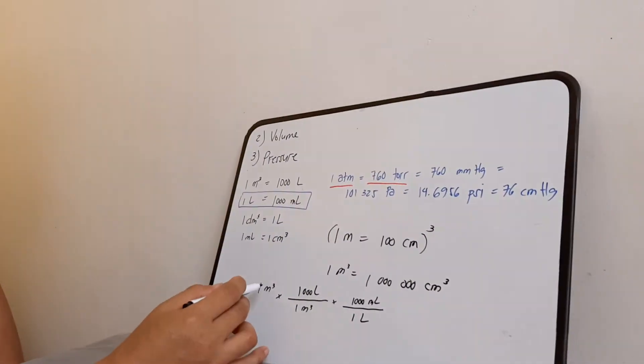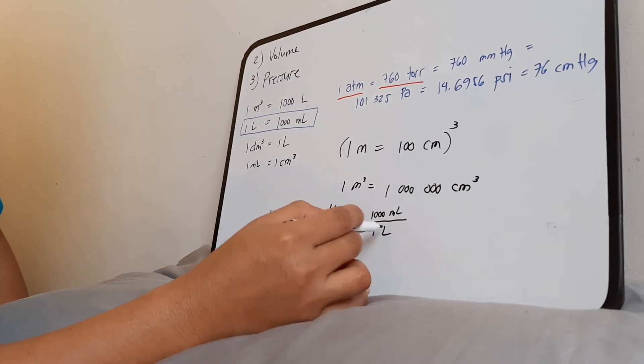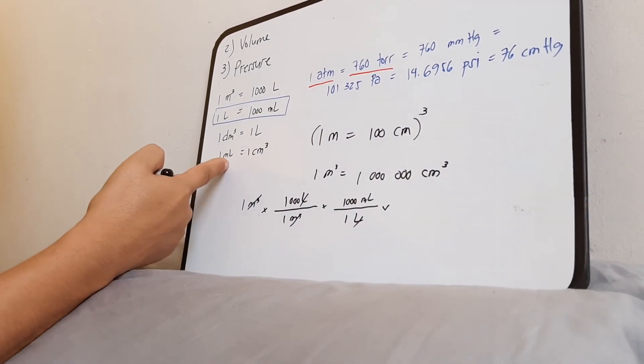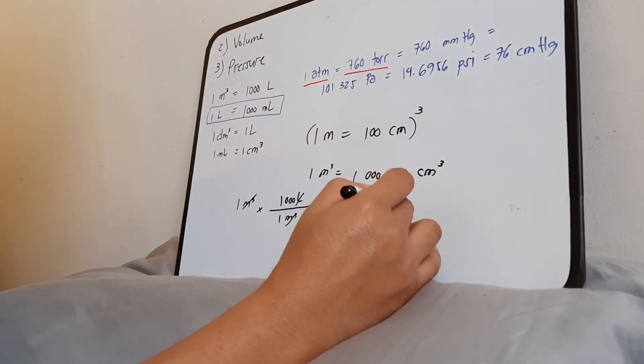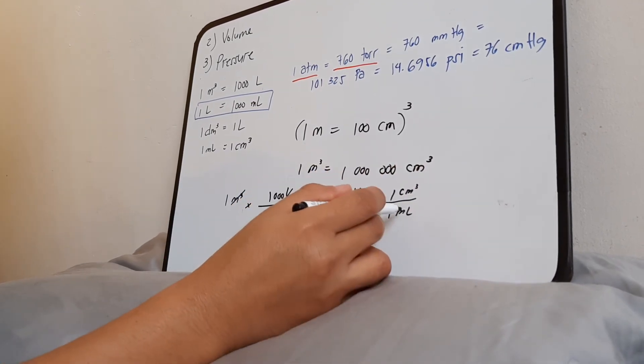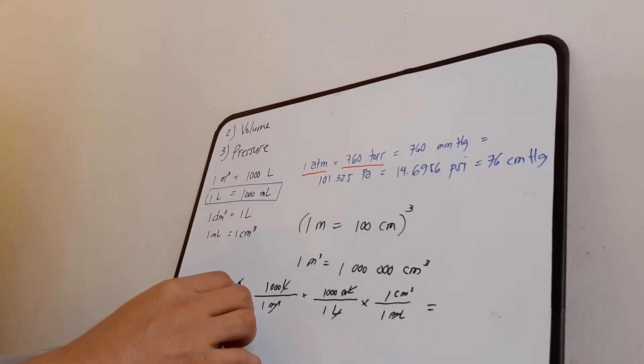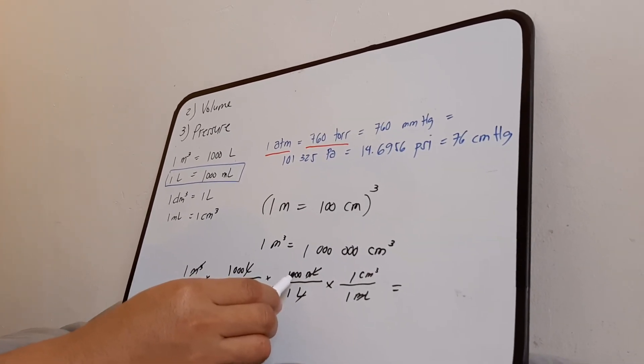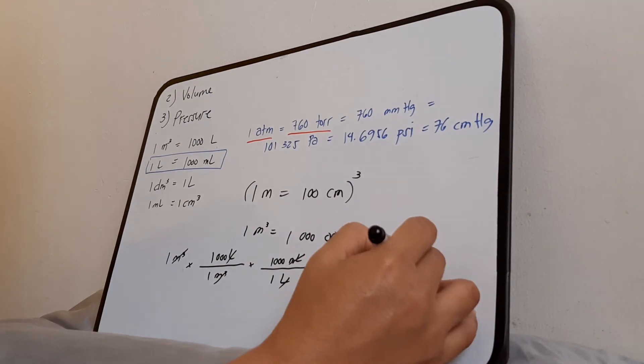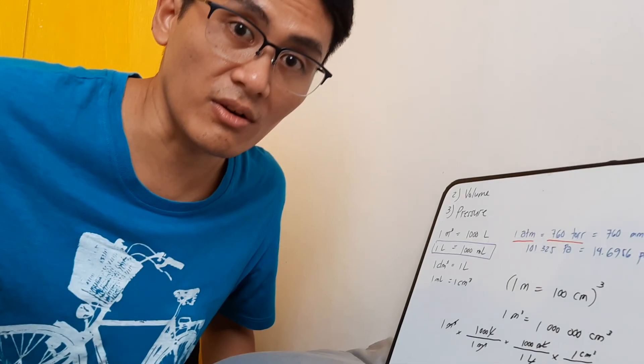And then so basically what you're doing here is you'll cancel out this, giving you liters. And you're canceling liters, giving you ml. And then finally you take this one, the last one, and say in 1 ml there is 1 cm cubed. So notice when you do the whole thing, that's 1,000 times 1,000, that's a million, divided by 1, 1, 1. So that's just 1,000,000 cm cubed.